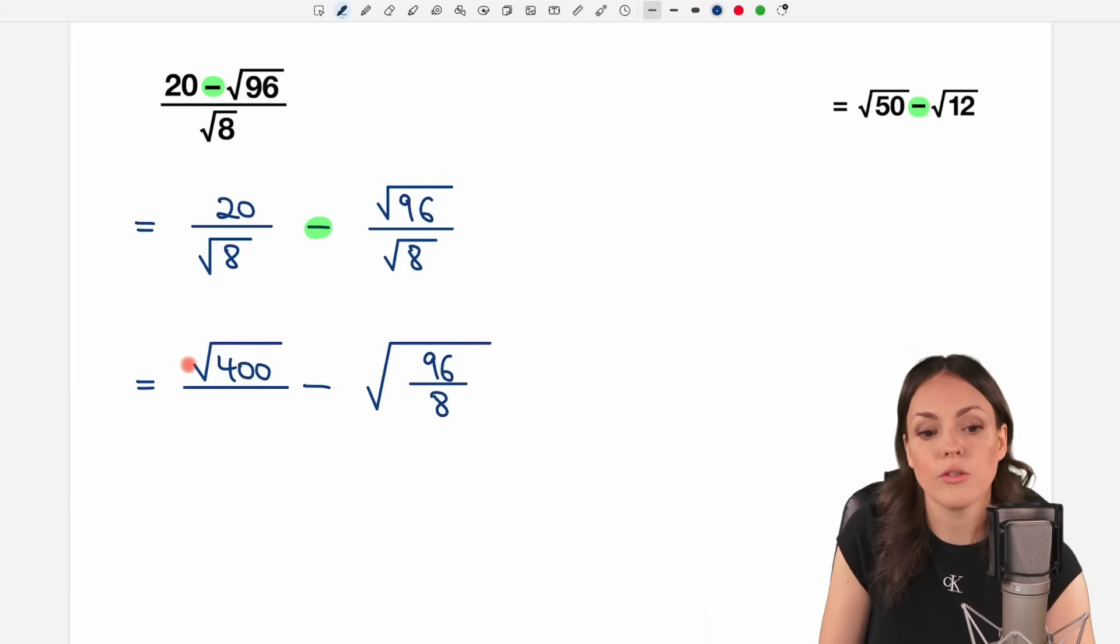20 times 20 equals 400, so instead of just the 20, I can write it as the square root of 400, because the square root of 400 equals 20. And then I have a square root here, and I still have the square root of 8 in my denominator.